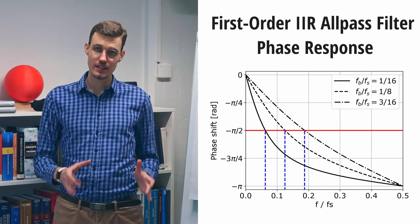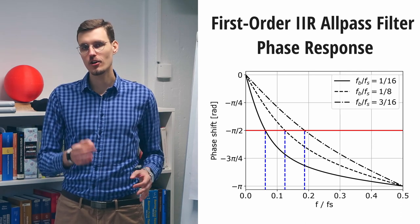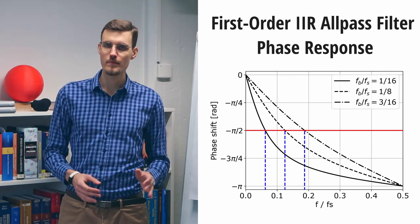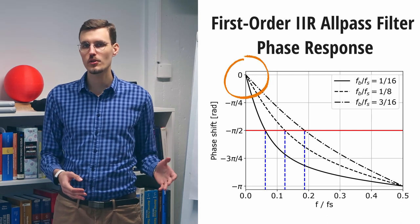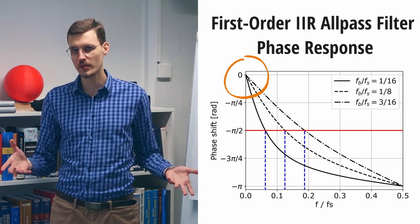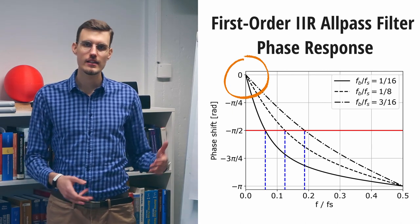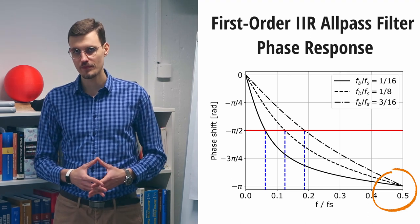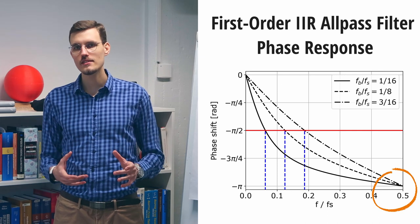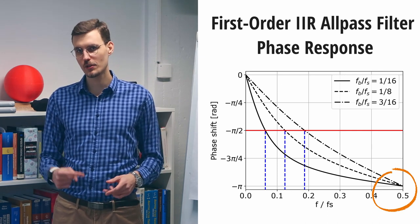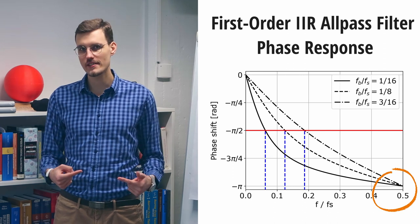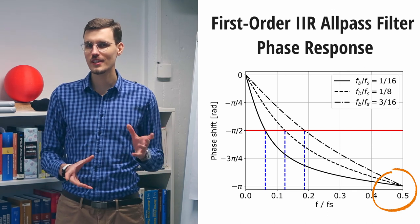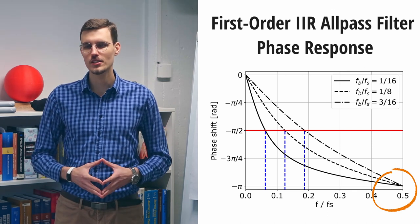Phase response tells us what's the phase delay of each frequency component that passes through our ALLPASS filter. As you can see, this phase delay is 0 at DC or constant component, 0 Hz component. And it goes down to minus pi at the Nyquist frequency. And minus pi means that the frequency component at the Nyquist frequency gets exactly inverted in phase, as if it were multiplied by minus 1. If you don't know what Nyquist frequency is, be sure to check out my video on sampling.